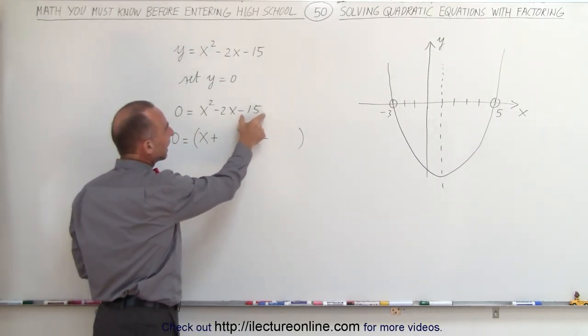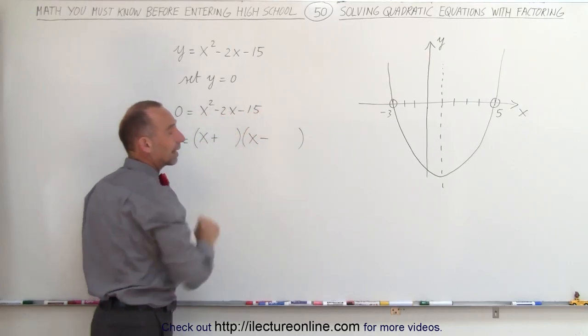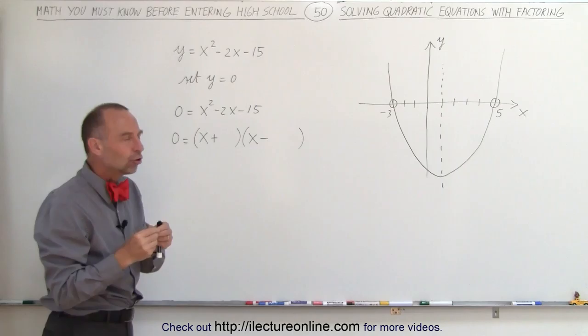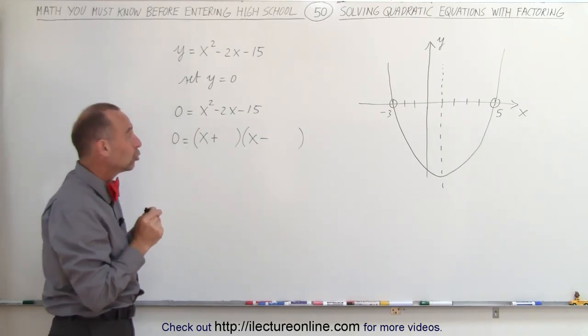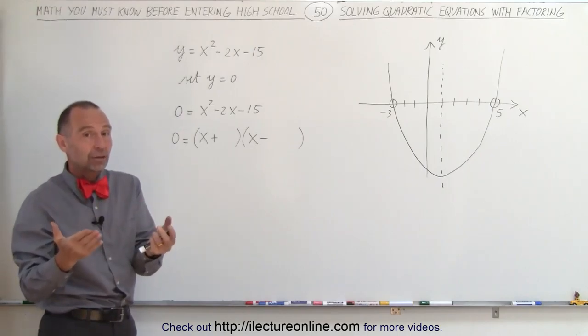And now we're looking for two numbers such that when we multiply we get -15 and when we add the two together we get -2, which means the larger number is negative and the smaller number is positive and they differ by 2. So 5 and 3 differ by 2.